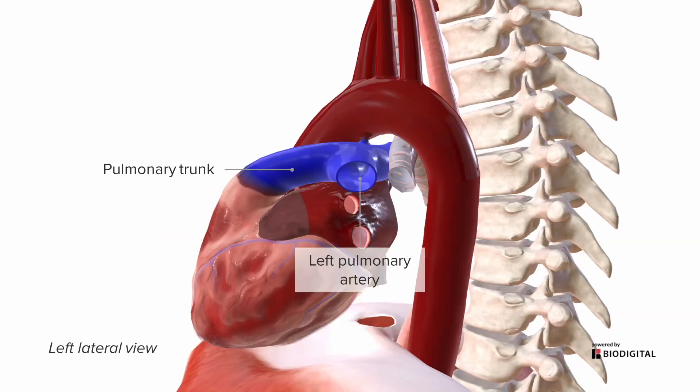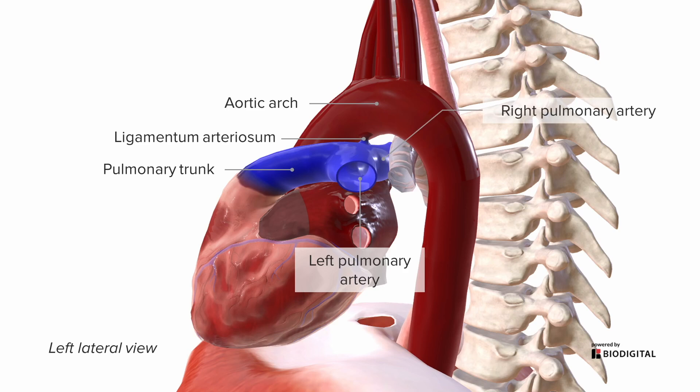Here we see the left pulmonary artery coming right at us and towards the hilum of the lung. We also see a tiny bit of connective tissue between the pulmonary trunk and the aorta called the ligamentum arteriosum, which is the leftover remnants of that fetal bypass called the ductus arteriosus. It connects to the aortic arch, which goes over the right pulmonary artery before moving leftward to cross over the left main bronchus.